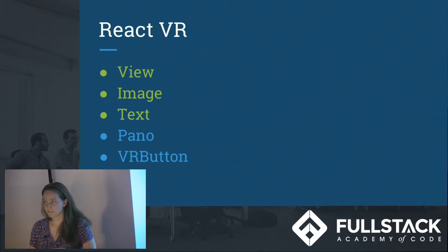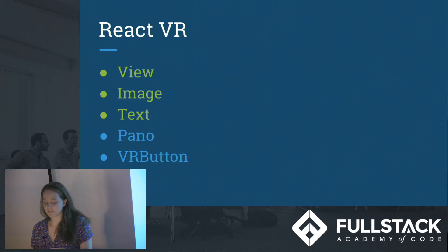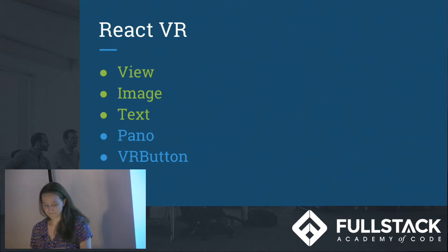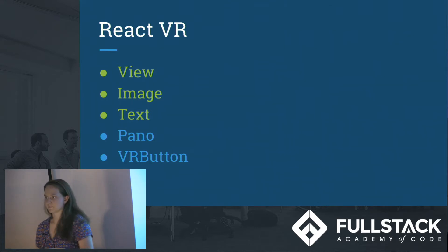We can look at some of the components that we're going to use in React VR. React VR has three of the components of React Native, because the developers of React VR found that some of the challenges they were facing were already addressed by React Native. For instance, they needed photos to be rendered at 60 frames per second or faster, and React Native already addressed a number of those issues.